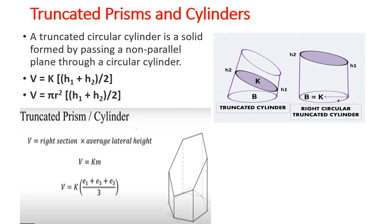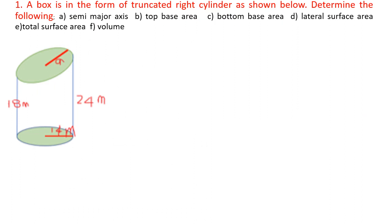We'll take up examples. A box in the form of a truncated right cylinder is shown below. Determine the semi-minor axis, the top base area, the bottom base, lateral surface area, and the volume. Solution: